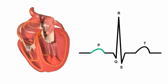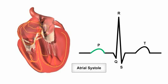The signal spreads across both atria, causing the muscle cells to depolarize and contract, inducing a phase known as atrial systole. On the ECG, this atrial depolarization is represented by the P wave.